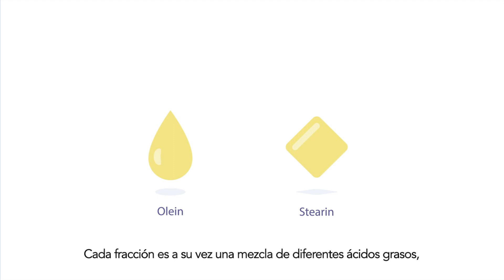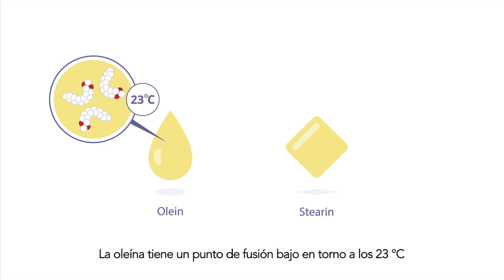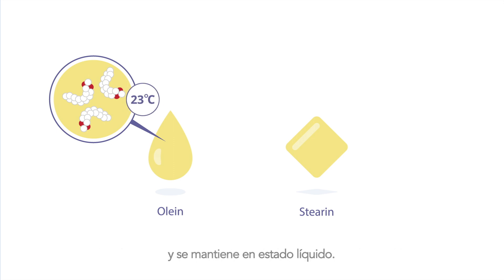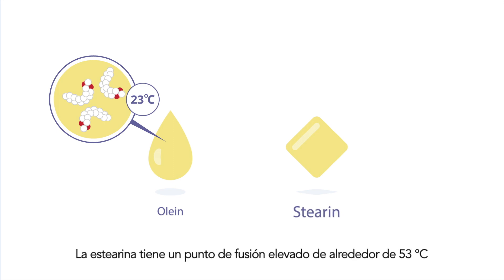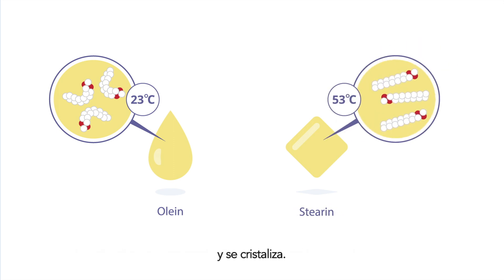Each fraction itself is again a mixture of different fatty acids with each a specific melting point. Olein has a low melting point of around 23 degrees Celsius and stays liquid. Stearin has a high melting point of around 53 degrees Celsius and crystallizes.